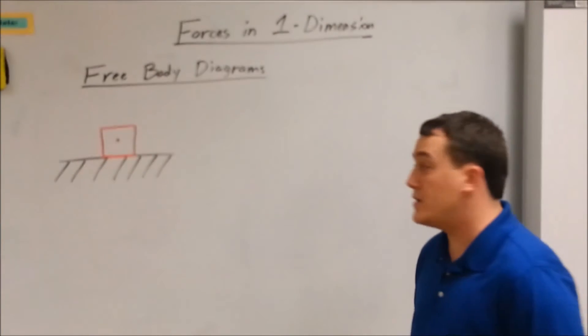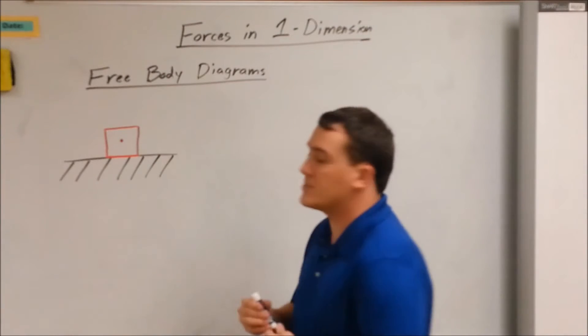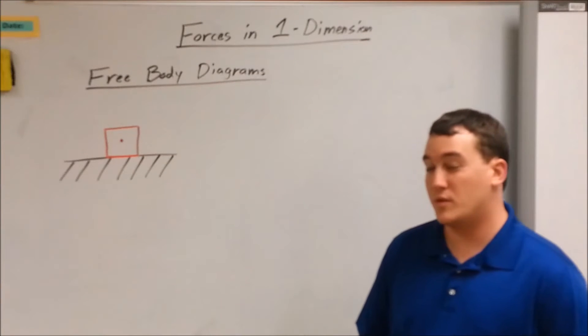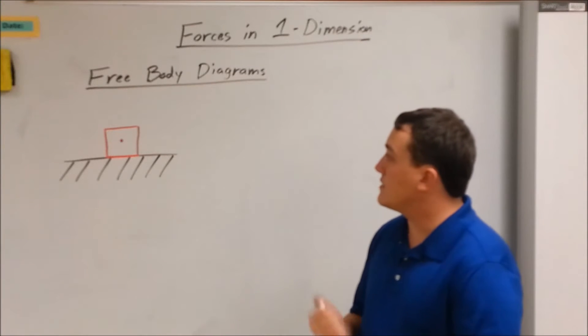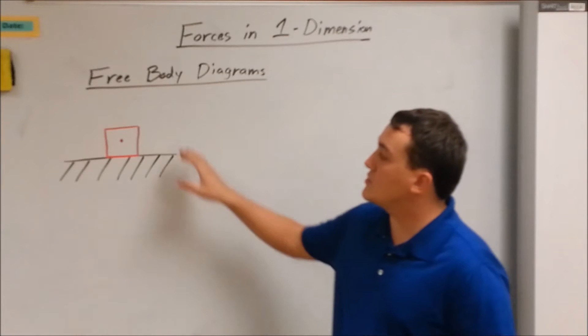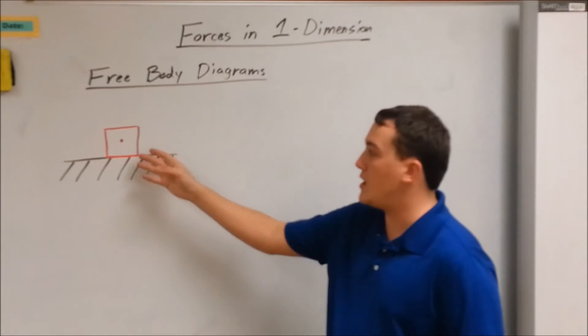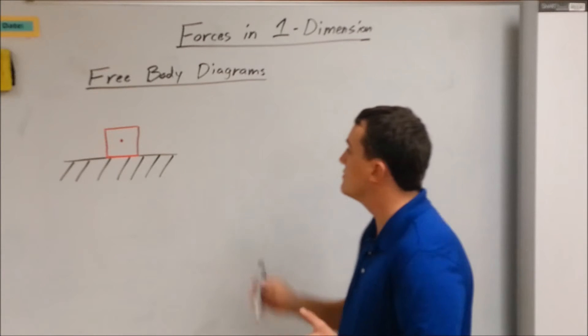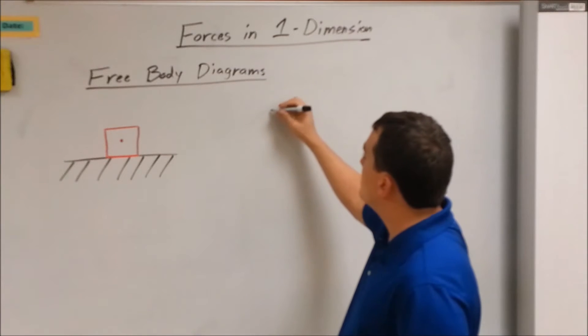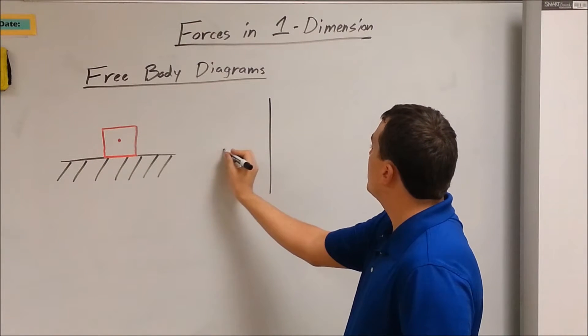First, you need to know a little bit about free body diagrams. That's just how we represent something with vectors. So we're trying to convert, say, something like this: a box laying on a flat surface. Because we are in one dimension, we want to represent it on a regular graph.